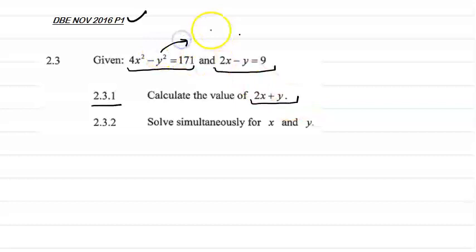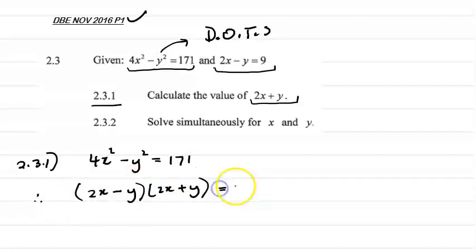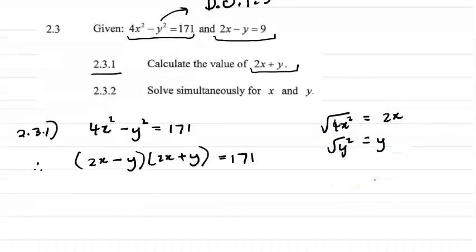If you look carefully here, we got difference of 2 squares because we've got a perfect square minus a perfect square. Therefore, in this question, we have to factorize first. 4x² - y² = 171. Therefore, (2x - y)(2x + y) = 171. Remember, a perfect square minus a perfect square can be factorized as follows. The square root of 4x² is equal to 2x and square root of y² is equal to y.